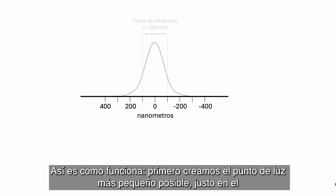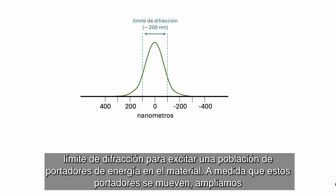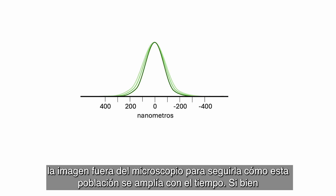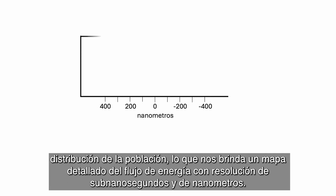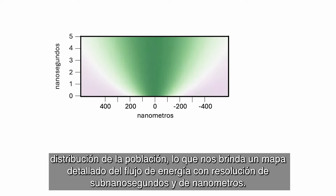Here is how it works. First we create the smallest possible spot of light right at the diffraction limit to excite the population of energy carriers in the material. As these carriers move, we magnify the image outside the microscope to track how this population broadens over time. While we cannot directly measure below the diffraction limit, we can measure tiny changes in the population spread, giving us a detailed energy flow map with sub-nanosecond and nanometer resolution.